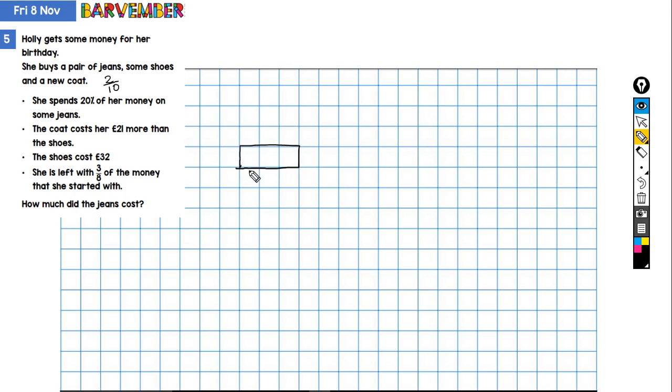Let's do the first part. And this is going to be the jeans. So we've got jeans. And what was this? 20%. And I've already mentioned that that's two tenths.